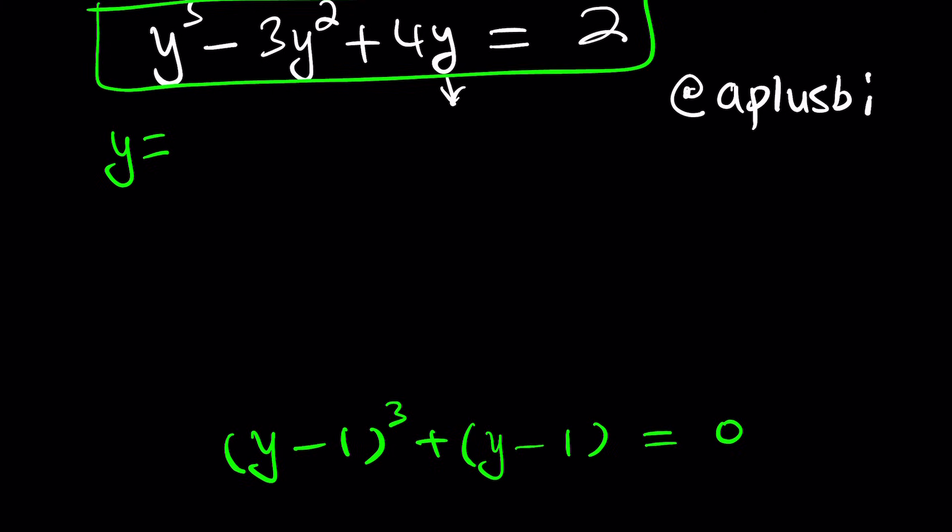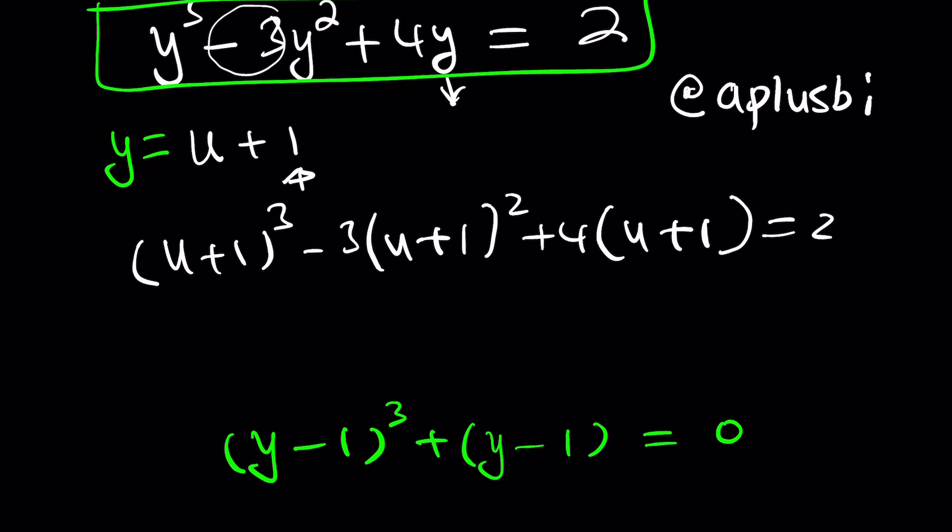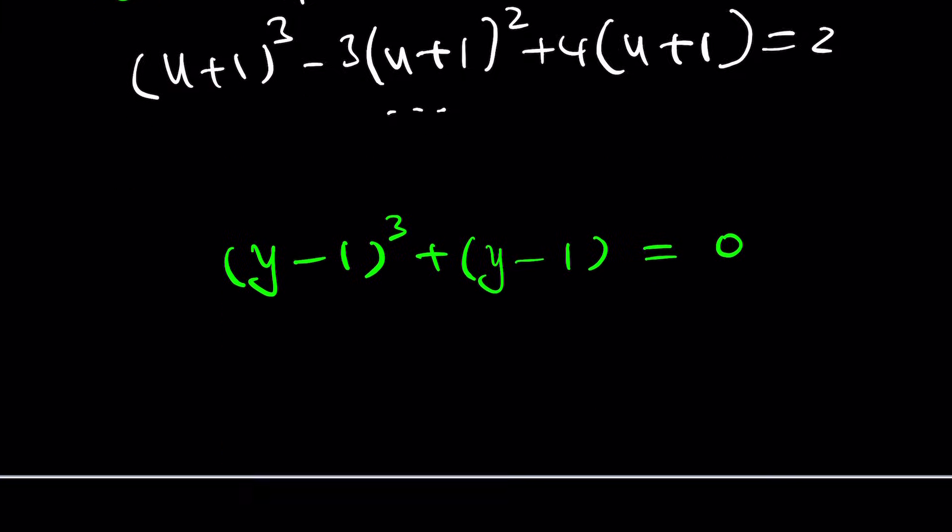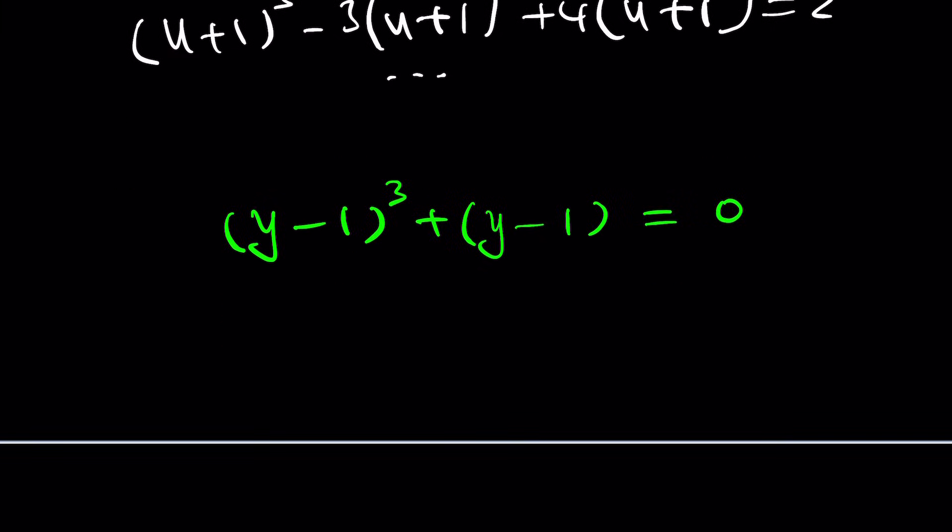Now, what we can do is maybe we can replace y with u + 1. And here's how you find this number. u is just another variable. But which number to add is you take this number and divide by -3. That coefficient divided by -3 is going to give you the number to add. So when you replace y with u + 1, you get (u + 1)³ - 3(u + 1)² + 4(u + 1) = 2. And then when you expand it, a lot of things are going to cancel out, giving you a really, really simple solution. Go ahead and do that as an exercise and let me know what you get.